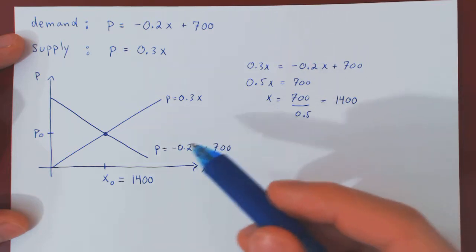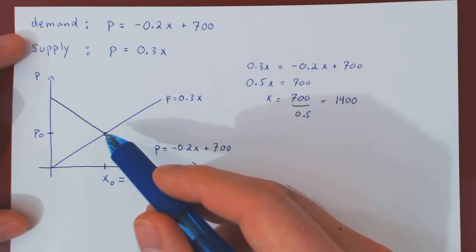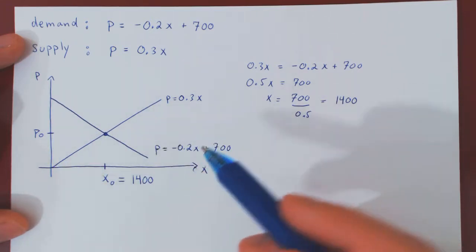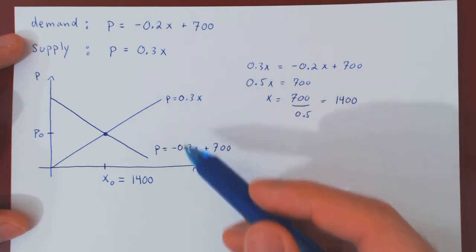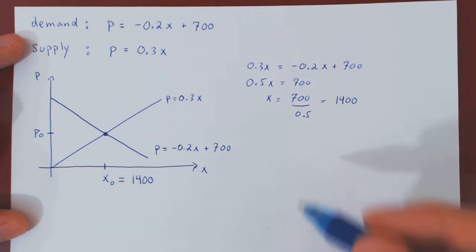As we have a point of intersection, the p-value is the same on both curves, so if both curves give us the same p-value, let's take the simplest one, let's take 0.3 times x.